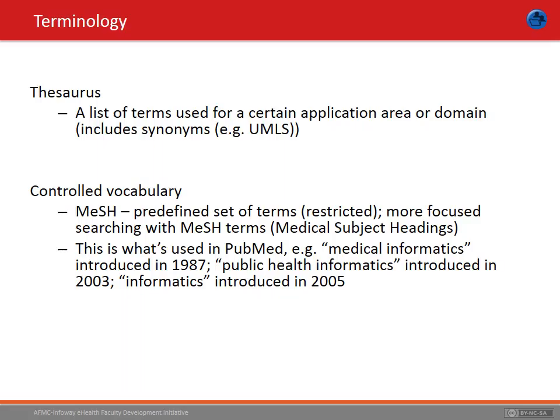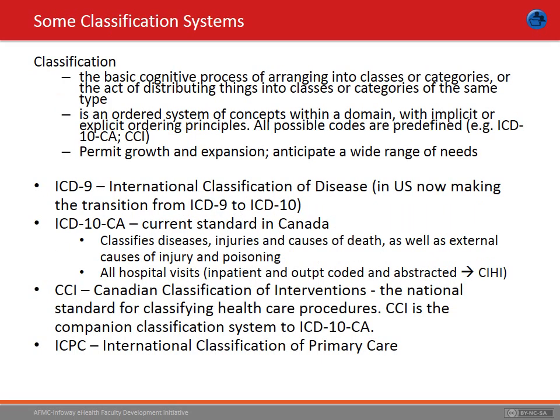Let's start with some simple definitions. We have encountered some of these in Part 1 — in using a thesaurus or in searching a medical literature database such as PubMed, using the National Library of Medicine's controlled vocabulary, or MeSH terms — the medical subject headings, or index terms. These terms are constantly reviewed and updated, and new terms added as new diseases such as AIDS or SARS, or areas of study come into being. For instance, medical informatics was first introduced as a MeSH term in 1987, and informatics — which subsumes health informatics and eHealth — was introduced in 2005.